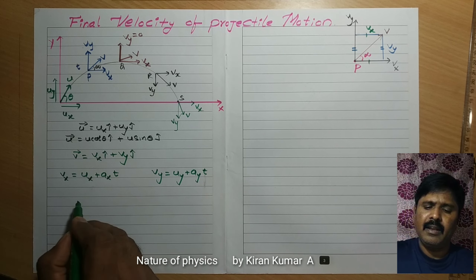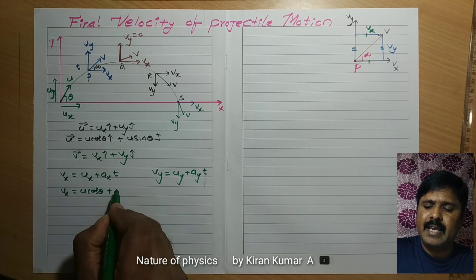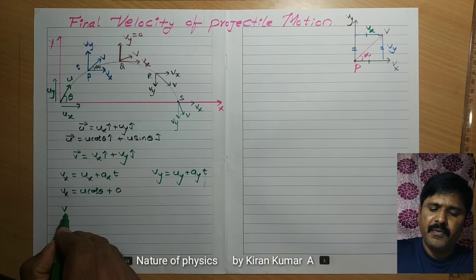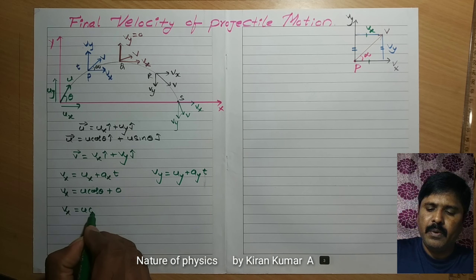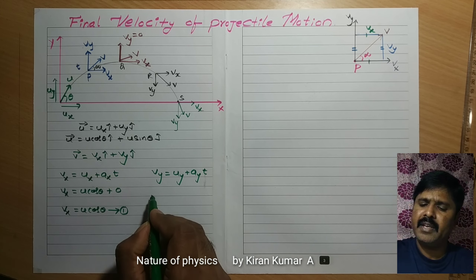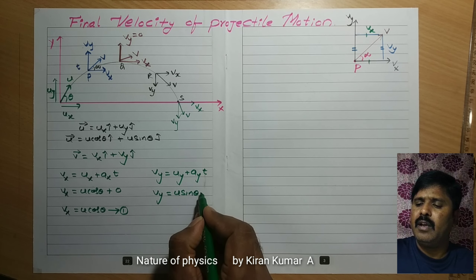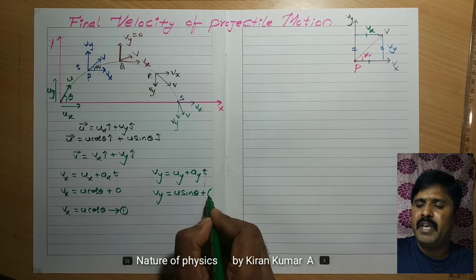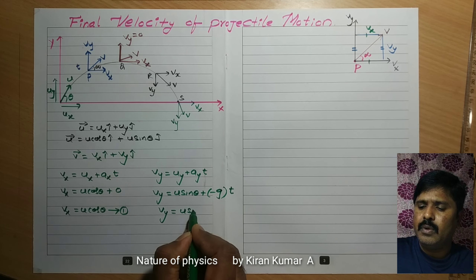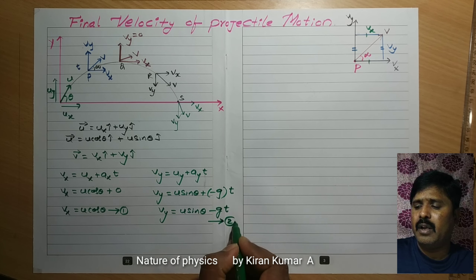See there clearly: Vx is equal to Ux, which is U cos theta, plus Ax which is 0 — so 0 into anything is 0. I got Vx equal to U cos theta, written as equation number 1. Next, Vy is equal to Uy plus Ay, where Ay is minus G, into T. So Vy is equal to U sin theta minus G·T. This is written as equation number 2.